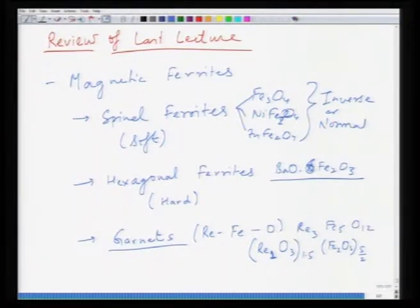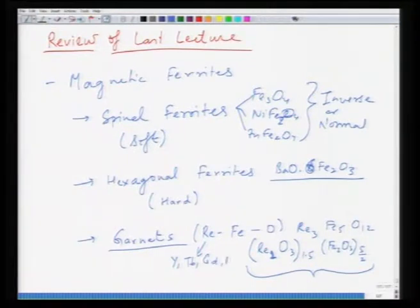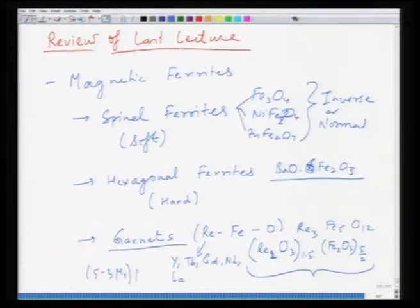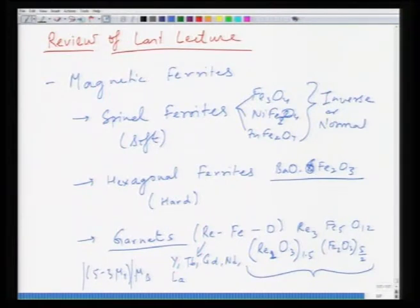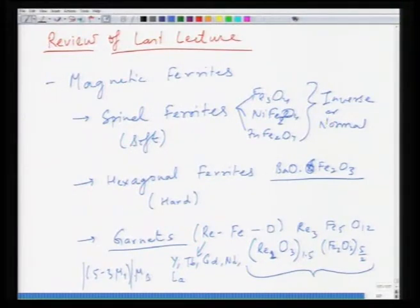Garnets can be tuned quite well because you can use the rare earth atom as either yttrium, terbium, gadolinium, neodymium, or lanthanum. Depending upon the magnetic strength of each of these, you have a net magnetization of the material, which is essentially (5 − 3μᵣ)μB or equivalently (3μᵣ − 5)μB. Basically, depending upon μᵣ — the magnetic moment strength of these rare earth ions — you get the net magnetic moment, and this is tunable. These structures can be made in single crystal form or in oriented form, so microstructural and compositional tuning are quite important in determining both the magnetic moment and the Curie temperature.